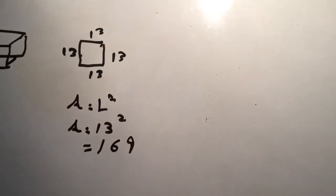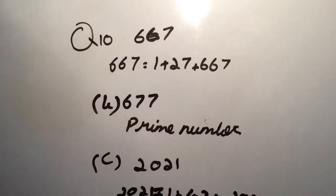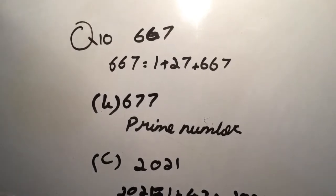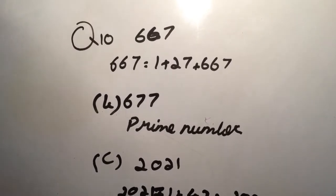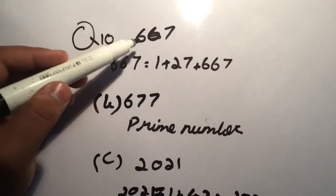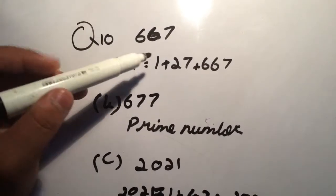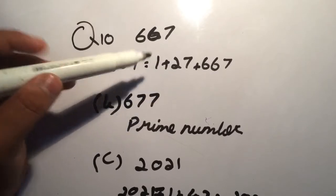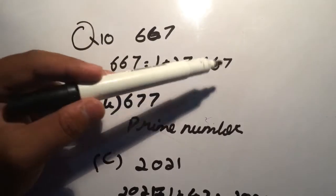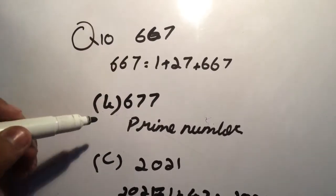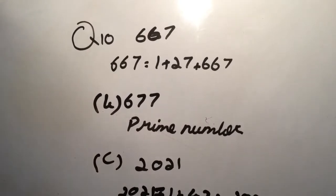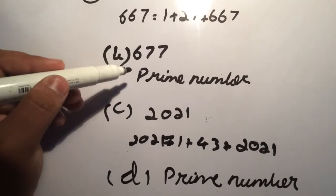So guys, let's come to question 10, which is: determine whether each of the following is a prime number or composite number. Part A, 667, it has more than two factors: 1, 23, 67, 667, so it's a composite number. Then 67 has only two factors, 1 and itself 67, so it's a prime number.